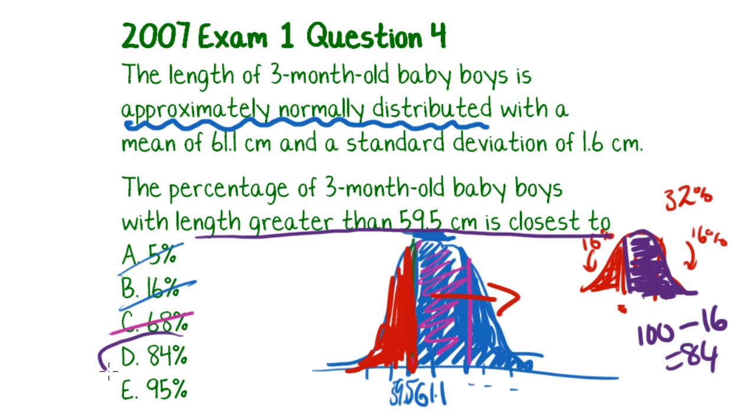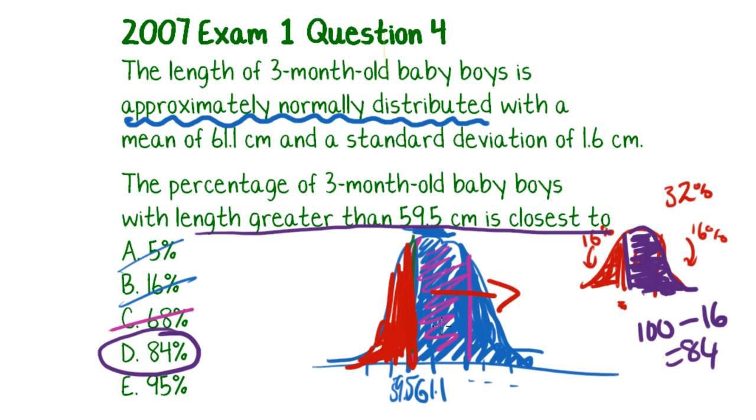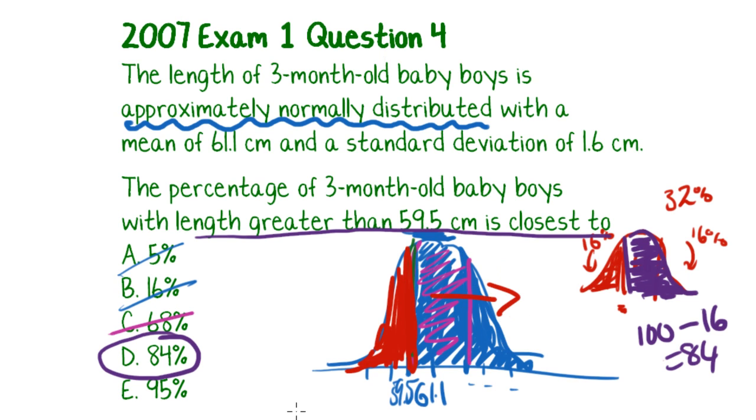So 100 minus 16 is 84. And what do you know? That's one of my answers. Another way that you could work it out is to say what we're looking for is this 68% in here plus this remaining tail. So you know, so I'm talking about that plus this orange bit here. So you know that the part in the middle is 68 and you know that the tail here is 16 because that's one of those two corresponding remaining tails. So you could say 68 plus 16 which would also give you 84. So the answer for this question is D, 84%.